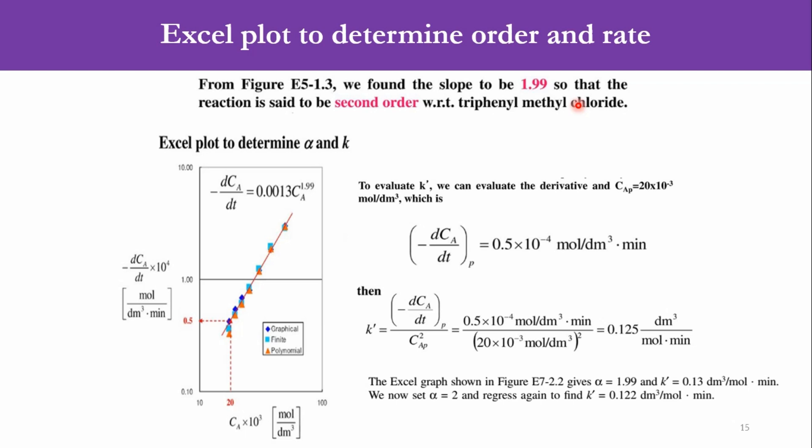Now the second part is that we have to evaluate the value of k'. So how can we evaluate it? We have to take any one point from this line, and then we have to correspondingly take one point from this line. So correspondingly, (-dC/dt)_P / (C_P)^α. Now α is 2 so it will be square. So -dC/dt value is 0.5×10^-4, because this graph is drawn like this ×10^4, so once you take the value to the other side it will become 10^-4. And divide it by CA at point P but its square obviously, so (20×10^-3)^2. It will become 0.125 dm³/mol/min. That will be the value of k' which we will be getting.